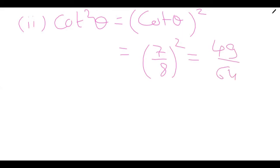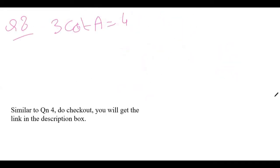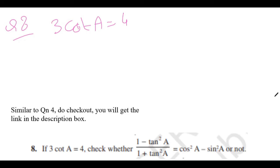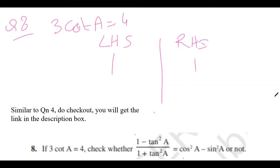Isn't it interesting — the first part equals the second part, both giving 49/64. For the third part, cot A equals something — this is similar to question number 4 which we've already done. In a 'check' question, you solve LHS and RHS separately and verify they come out the same.